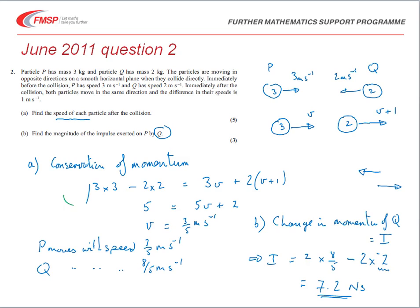Five marks are available in part A: a method mark and accuracy mark for writing down the conservation of momentum equation, then M1 A1 for solving and getting V equal to 3/5, and a follow-through A1 for getting 8/5 for Q's speed. Three marks are available in part B: M1 A1 for using impulse equals change in momentum, and a further A1 for getting the value 7.2.